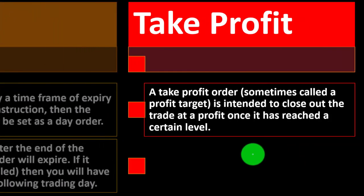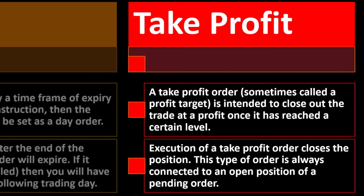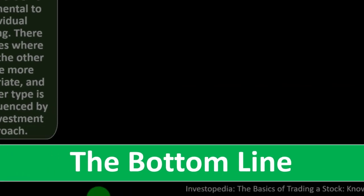A take profit order — sometimes called a profit target — is intended to close out a trade at a profit once it has reached a certain level. Execution of a take profit order closes the position. This type of order is always connected to an open position or a pending order.